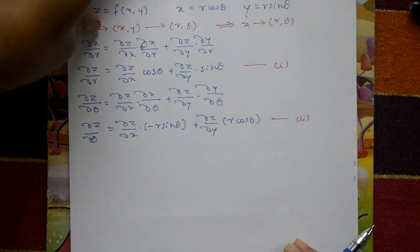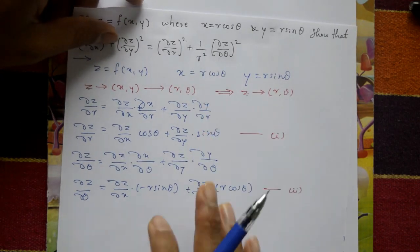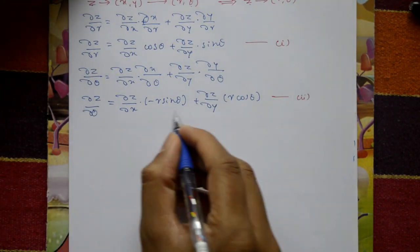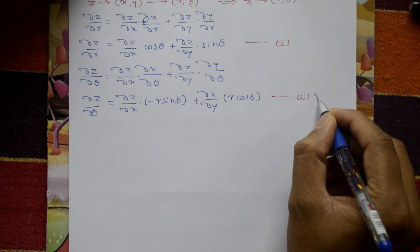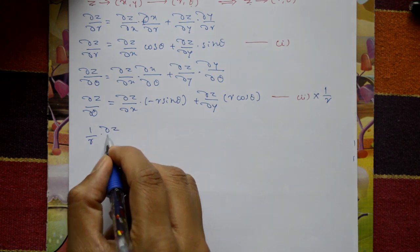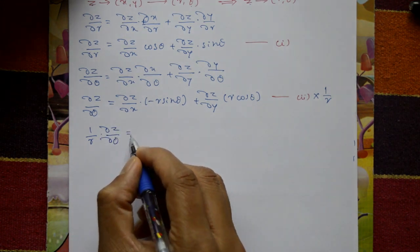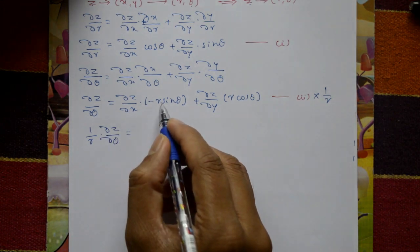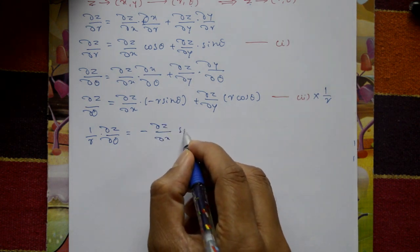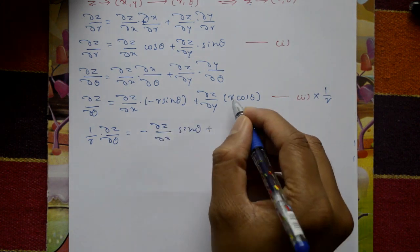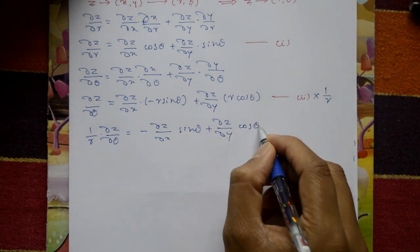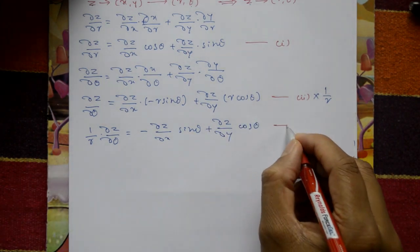Since the right hand side has 1 by r square, multiply equation number 2 by 1/r throughout. So 1 by r into dou z by dou theta equals minus dou z by dou x sine theta plus dou z by dou y cos theta. This is equation number 3.